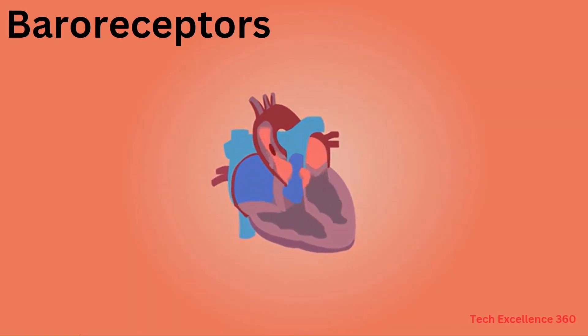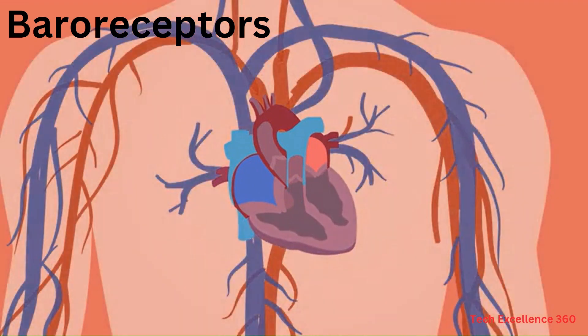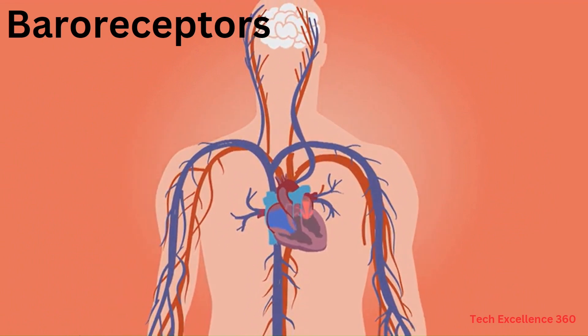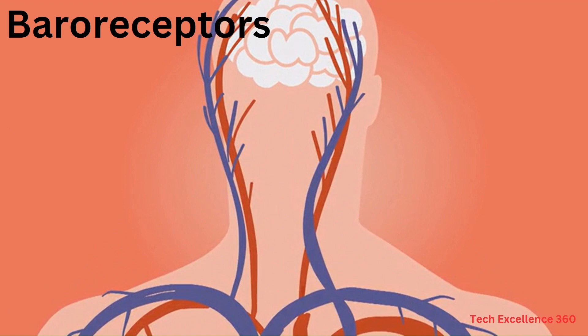Baroreceptors, found in blood vessels and in the heart, monitor changes in blood pressure. They send signals to the cardiovascular system to adjust heart rate and blood vessel diameter, helping to maintain blood pressure within a normal range.